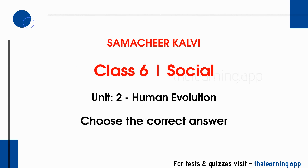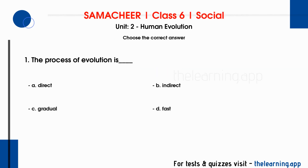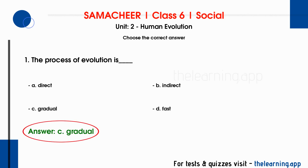First, choose the correct answer. First question: The process of evolution is dash. Option A: direct. Option B: indirect. Option C: gradual. Option D: fast. Correct answer is option C — gradual. The evolution process is a very gradual process.